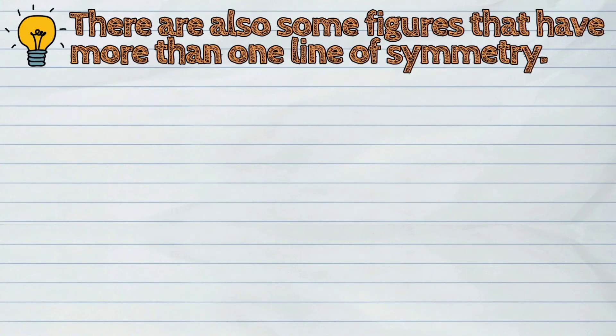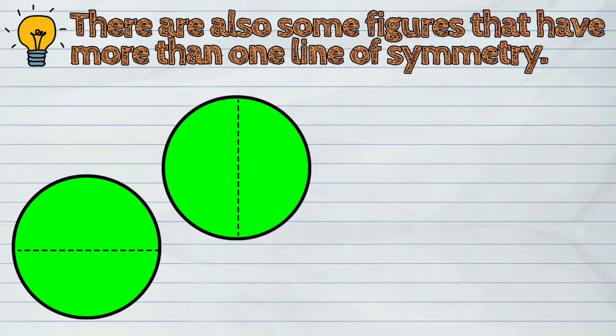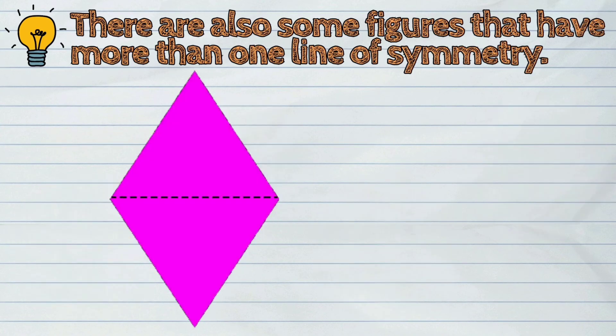There are also some figures that have more than one line of symmetry. Here are some examples. First, the rectangle. Second, the circle. And third, the diamond.